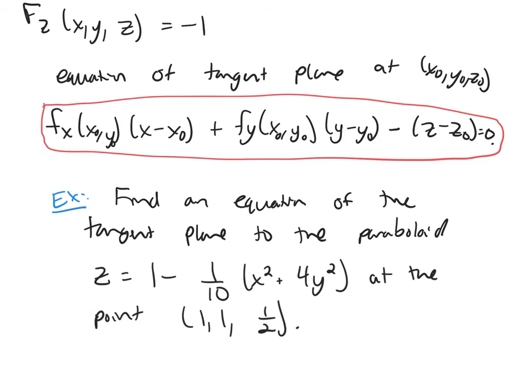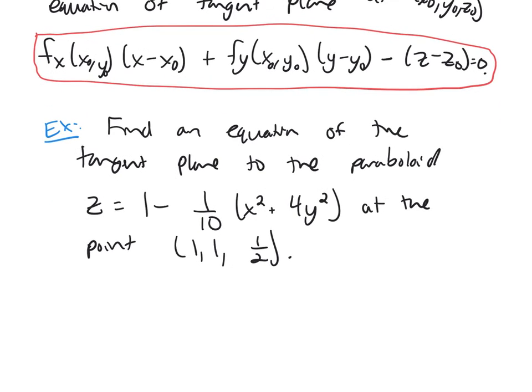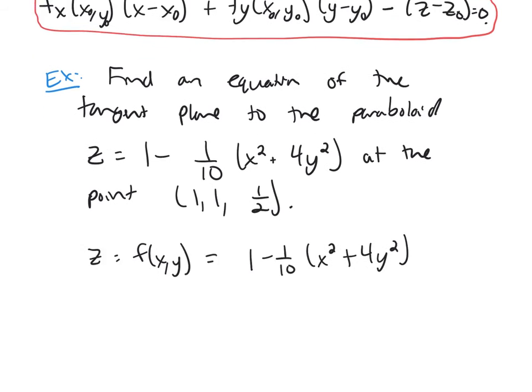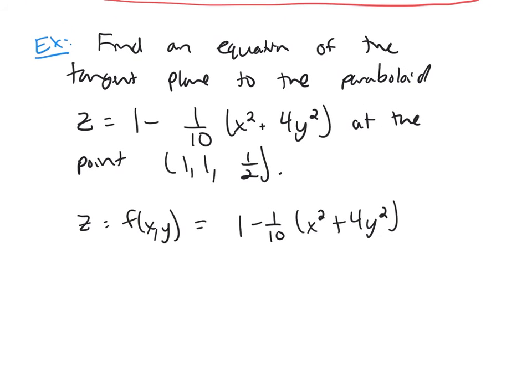Okay, so my function z is equal to f of x, y. So what is little f going to be? 1 minus 1/10 times (x squared plus 4y squared). So now I need to find the partial derivatives of this function.